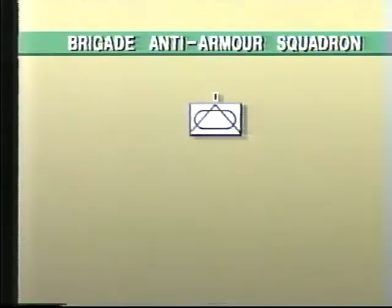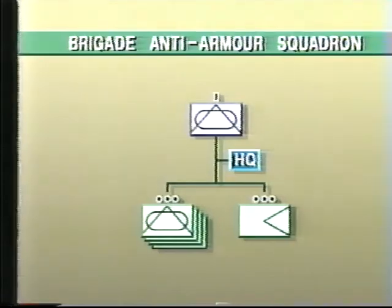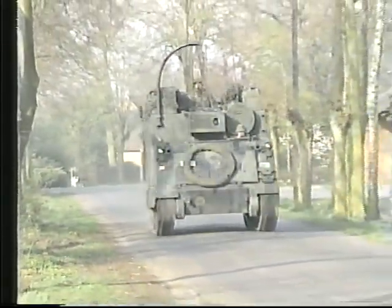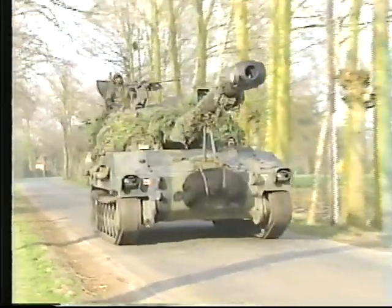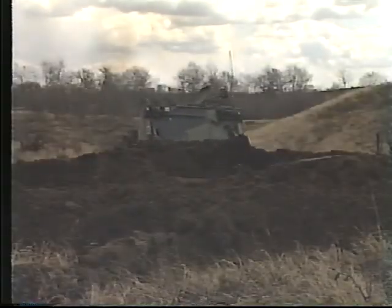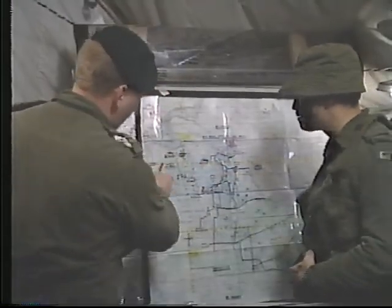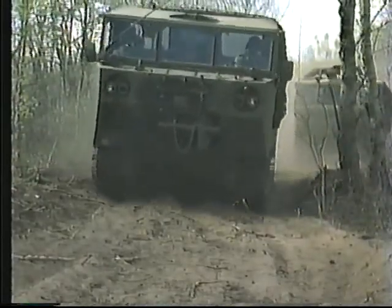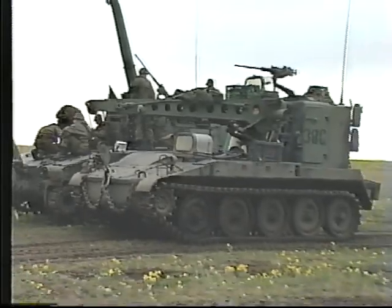The brigade anti-armor squadron comprises four tank destroyer troops, each with four tank destroyers and a support services troop. Its headquarters would be located well forward with a view of the main killing zone. It includes a tank destroyer and an APC dozer to assist with digging in. A liaison detachment would be located at brigade headquarters. The squadron's support services troop includes the vehicles and personnel to provide the dispersed elements in the forward area replenishment, first-line maintenance, and casualty evacuation.